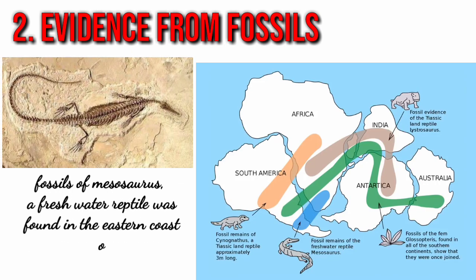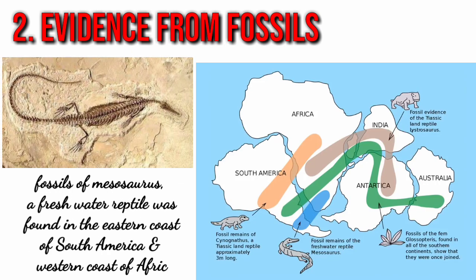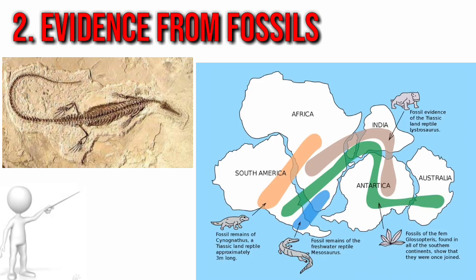Fossils of Mesosaurus, a freshwater reptile, were found on the eastern coast of South America and the western coast of Africa. According to Wegener, while Mesosaurus roamed the land, these continents were connected, but after Mesosaurus became extinct, the continents were torn apart.